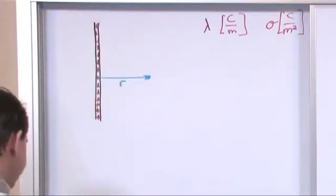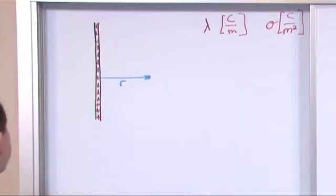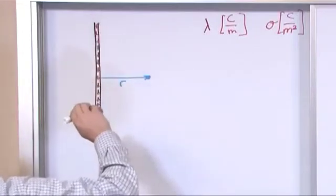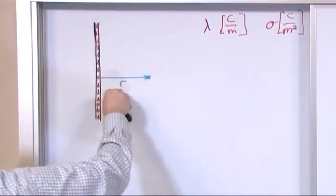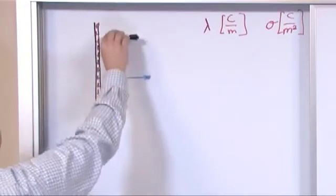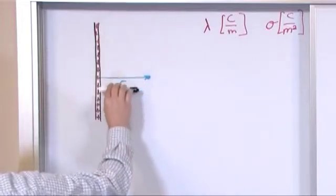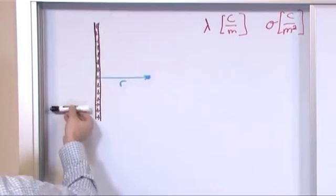Now, from symmetry, you might guess from doing these problems that if these are all positively charged, the electric field, you wouldn't expect it to go this way or this way, or kind of a crazy angle. You would expect, just from the way it's laid out, that the electric field would be coming directly out of this wire.